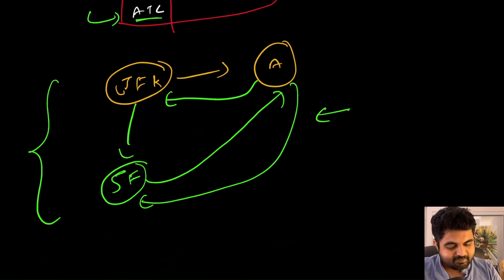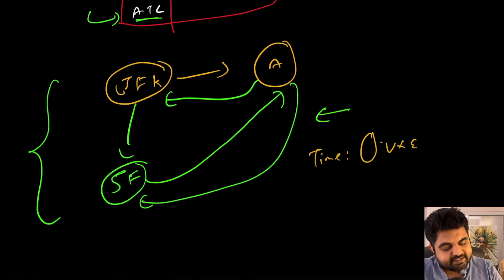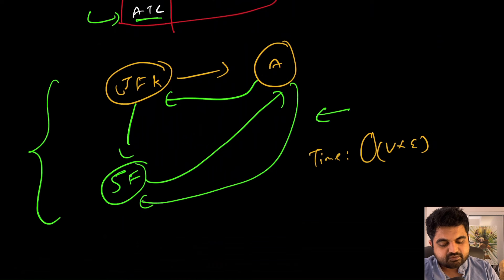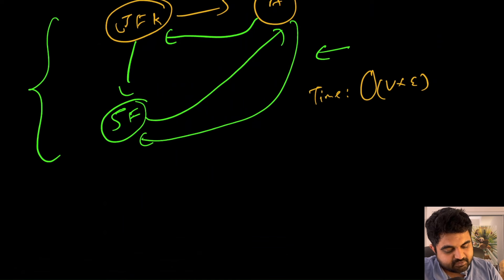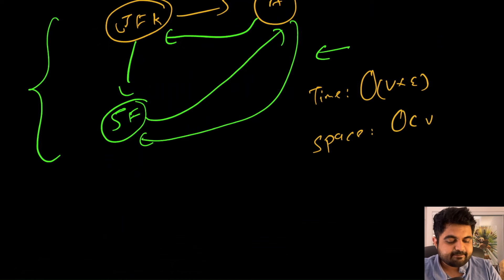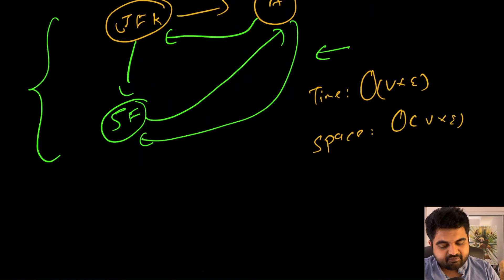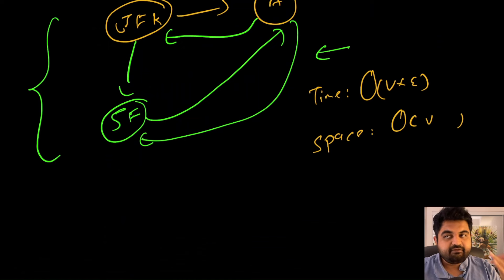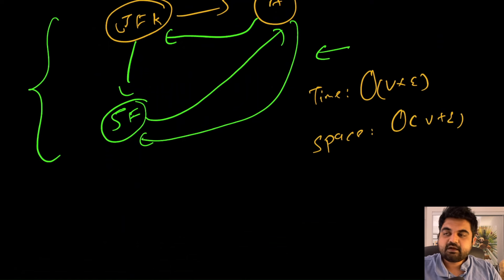Time complexity is O(V × E) for the DFS traversal, plus O(n log n) for sorting — but since V×E dominates, sorting doesn't need to be separately factored in. Space complexity is O(V + E) because we create a hash map of size V with all edges stored in the value lists.